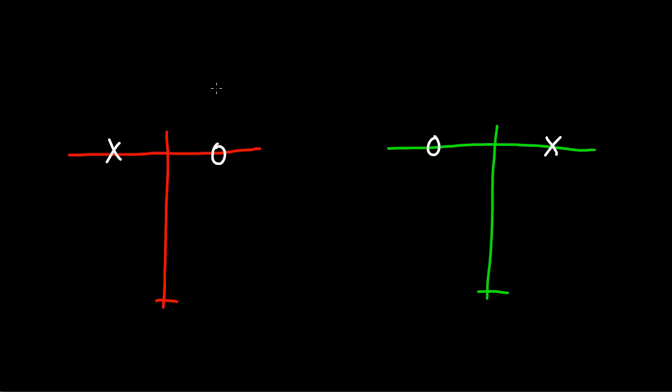We'll draw asymmetric thrust, tending to turn this airplane to the left. And asymmetric thrust, tending to turn this airplane to the right.